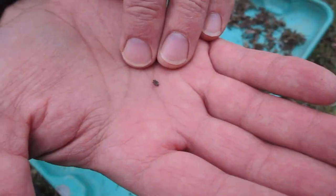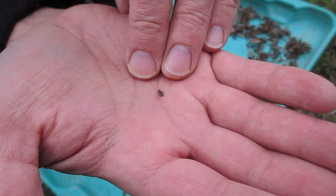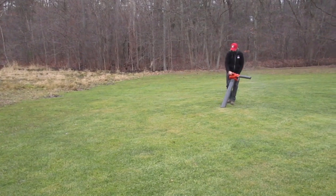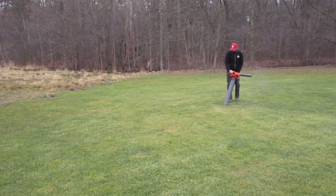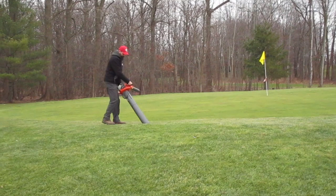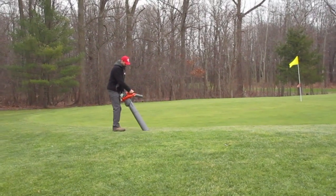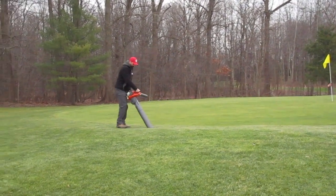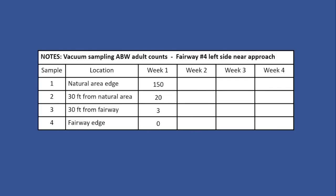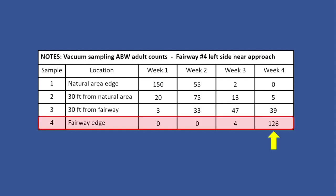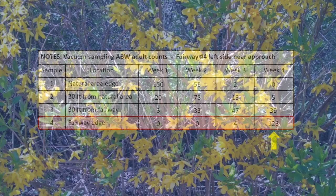Empty the contents of the basket onto a tray and sort through the debris to look for adult weevils. Record the numbers of any adult annual bluegrass weevils you find. Repeat these steps, moving progressively closer with each vacuum pass until you reach the playing surface. In the area shown in this video, I've made multiple vacuum passes between the natural area and the green.